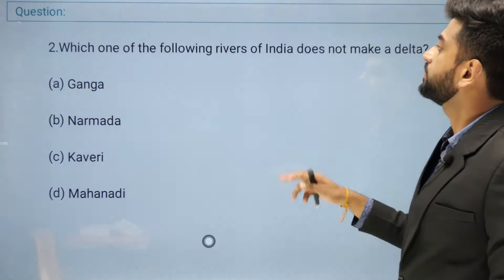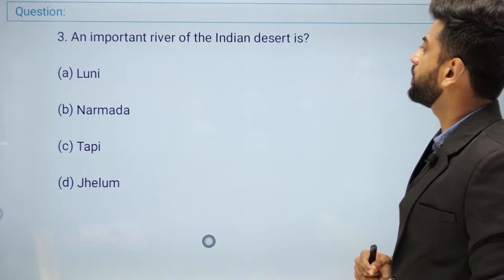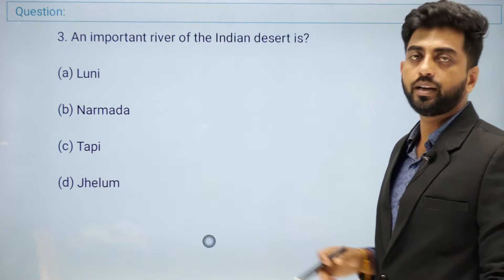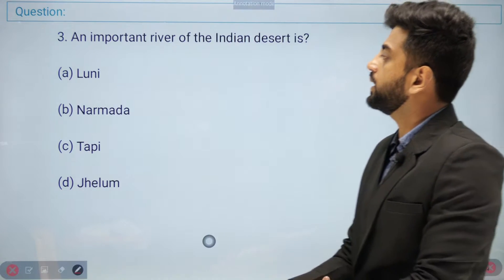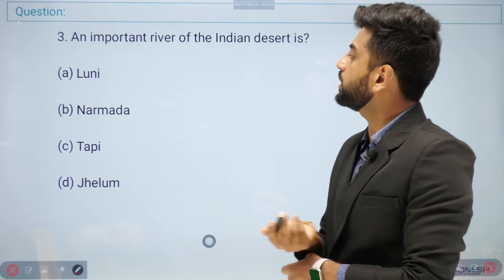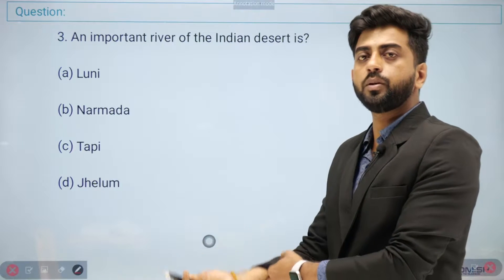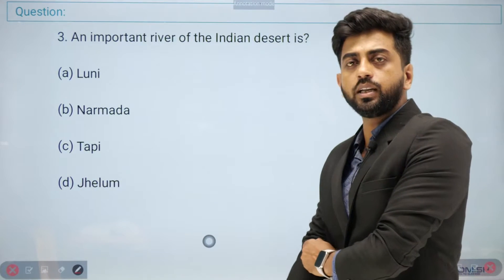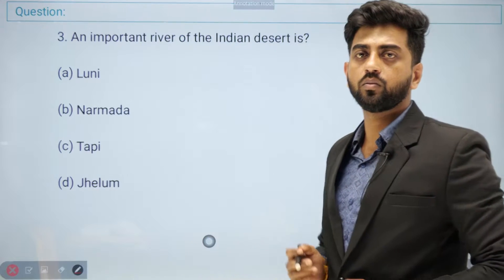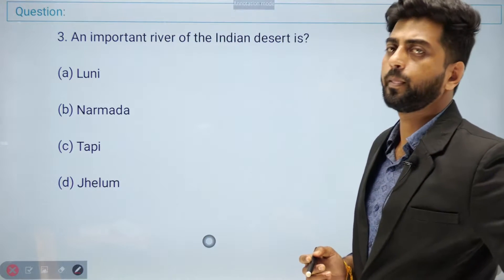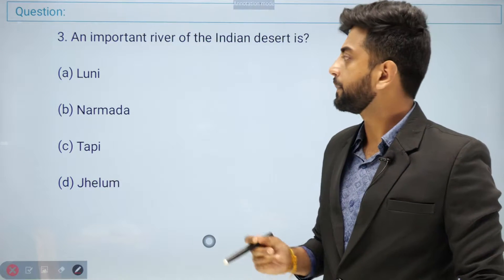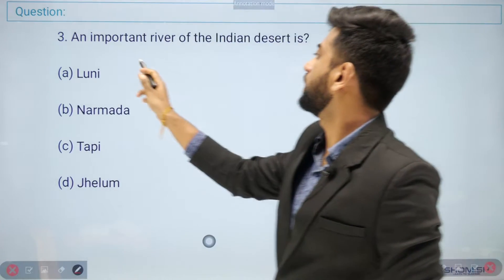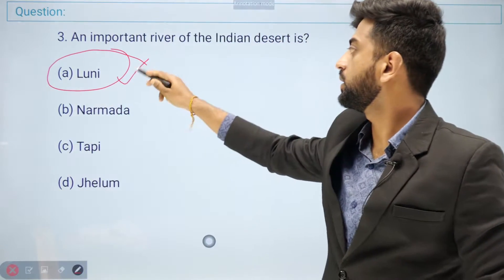Question number three: an important river of the Indian desert is — option A: Luni, option B: Narmada, option C: Tapti, option D: Jhelum. The right answer is Luni. Luni is the important river of the Indian desert.